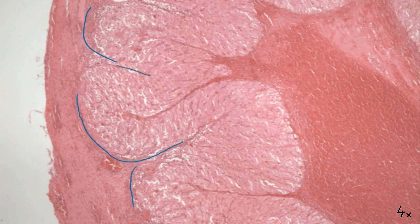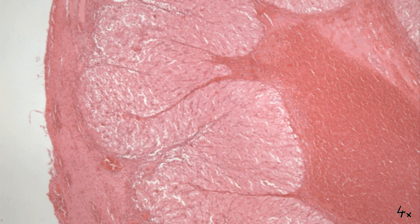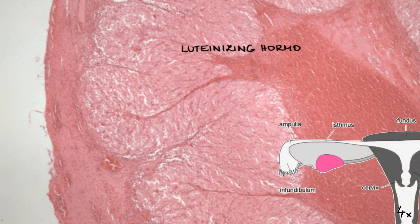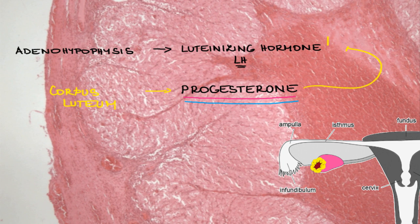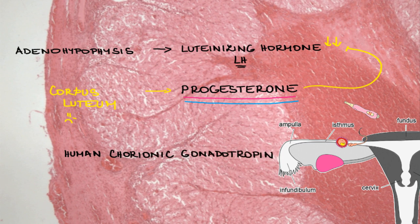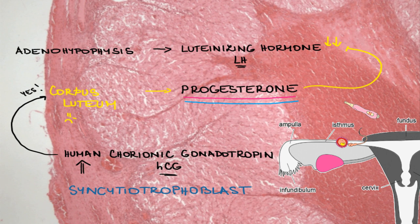A certain level of luteinizing hormone, LH, in the blood is needed to maintain the existence of the corpus luteum. LH is produced by the adenohypophysis. Progesterone produced by the corpus luteum works as a negative feedback mechanism, slowing down the release of LH from the adenohypophysis. As a consequence, as time goes by, the corpus luteum degenerates. In case fertilization of the oocyte occurs, human chorionic gonadotropin produced by the syncytiotrophoblast prevents the degeneration of the corpus luteum. It functions similarly to LH, so the corpus luteum gains in size and continues production of progesterone.